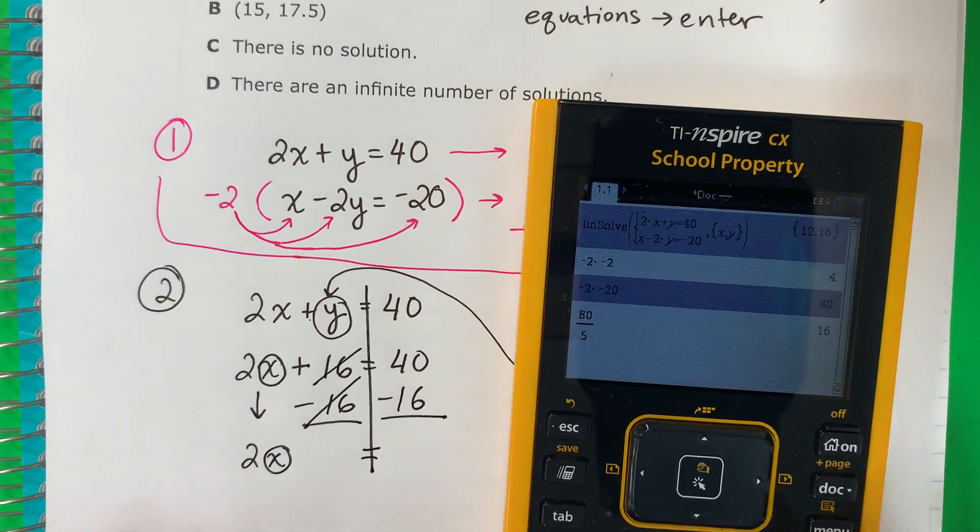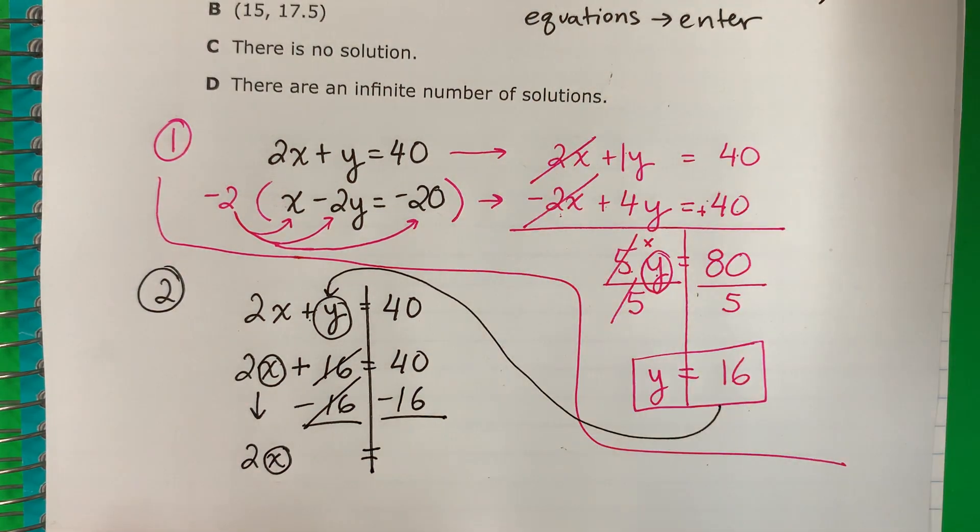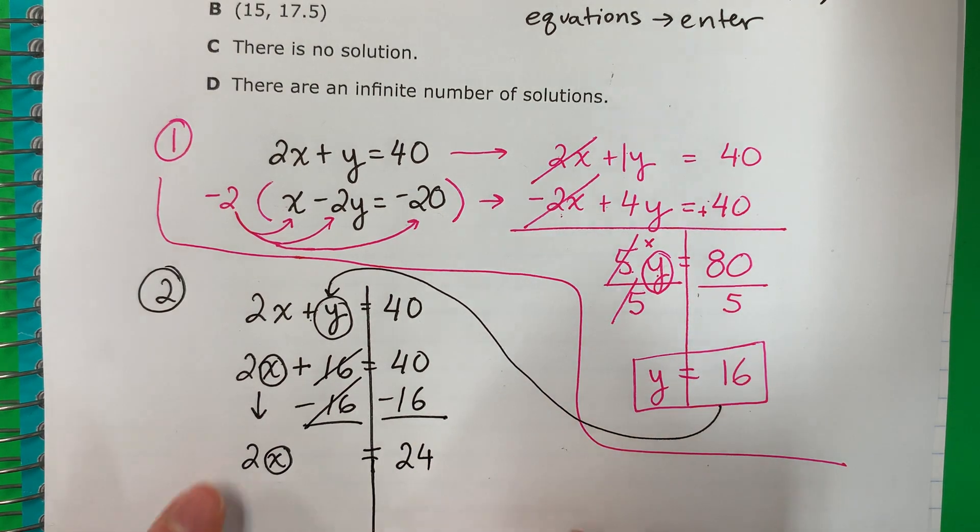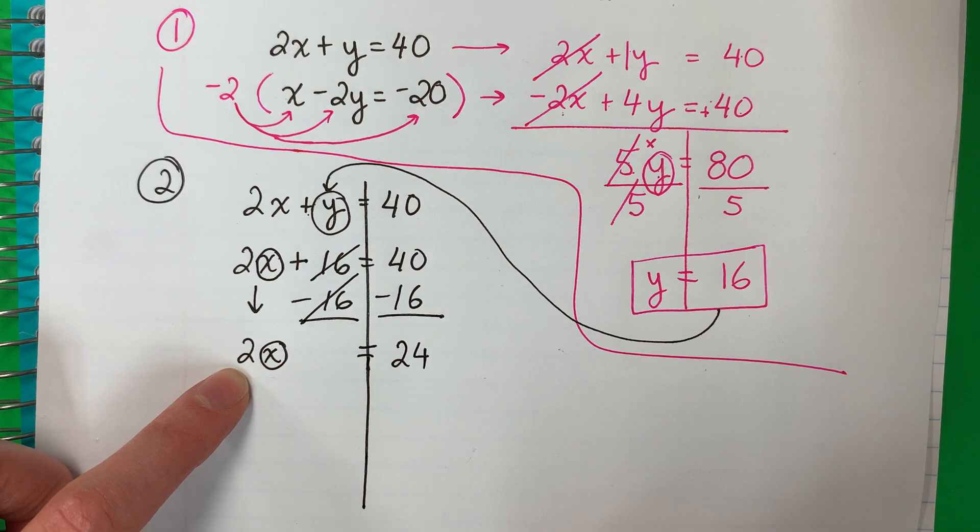40 minus 16. Let's go ahead and put that in the calculator. 24. I want x alone, but it's not alone. Quiero x sola, pero no está sola. I have 2. Tengo 2.